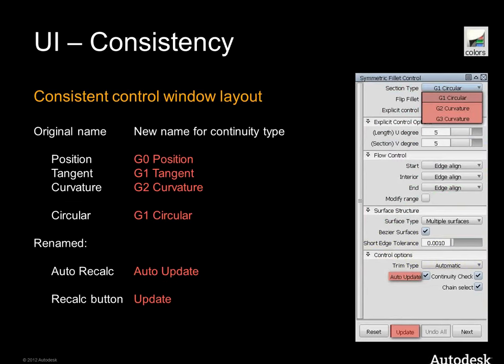We did the same for continuity type titles and names. In red color you see all the new names: for position it will always be G0 position, tangency is G1 tangent, and for curvature G2 curvature. For fillets we name G1 circular to indicate it's a circular shape. The last one, for construction history auto-recalculation, we now call it 'auto update' — easier to understand. We did quite a lot of work in this UI area.